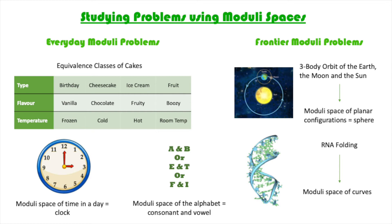This is the spirit of a moduli space in mathematics. We're looking at groups of similar solutions called equivalence classes, rather than individual solutions. This leads to new insights and allows us to apply a different set of mathematical techniques to a problem. Like with the cakes, however, there's not always a single moduli space — it depends on how we want to group solutions.